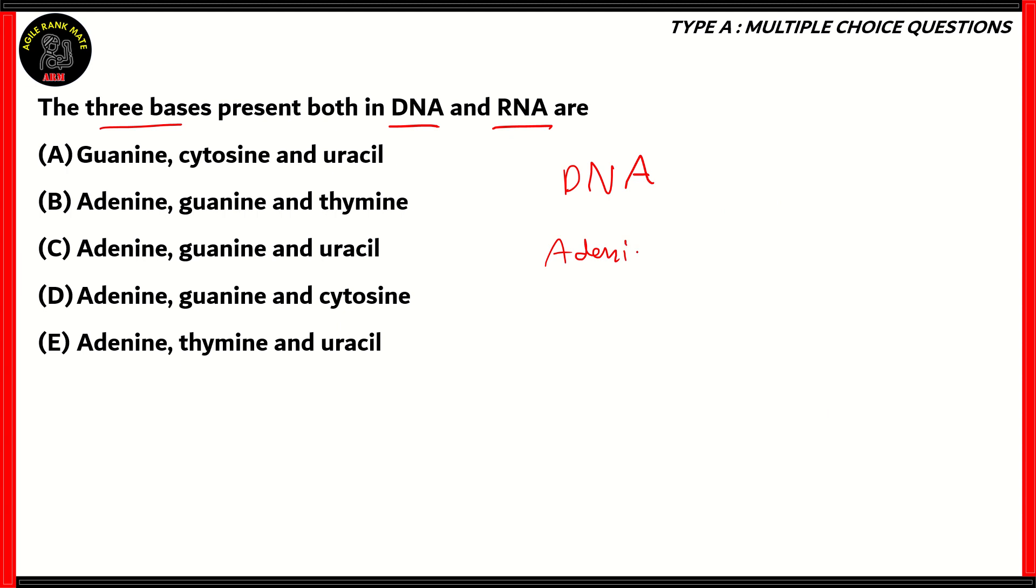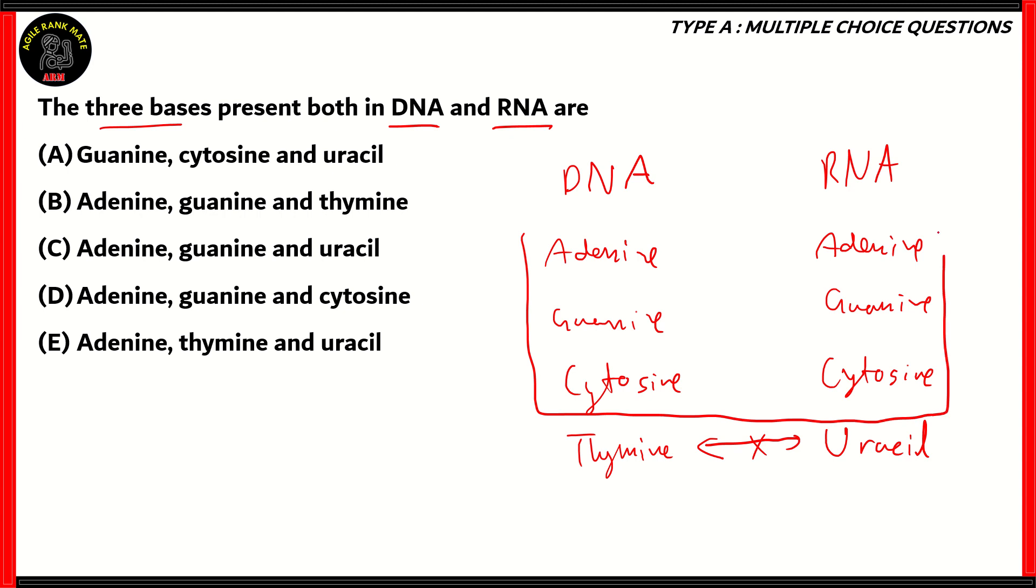For DNA, the bases are adenine, guanine, cytosine, and thymine. For RNA, it turns out to be adenine, guanine, cytosine, and uracil. So thymine and uracil are different bases because thymine has an extra methyl unit compared to uracil, and the other bases are all the same. So therefore, adenine, guanine, and cytosine are the three bases which are present both in DNA and in RNA. So option D turns out to be correct.